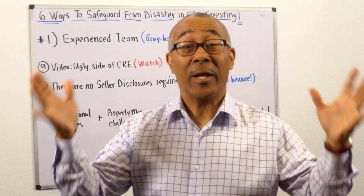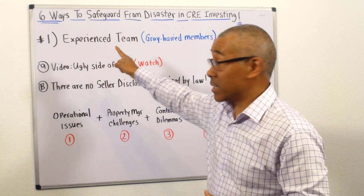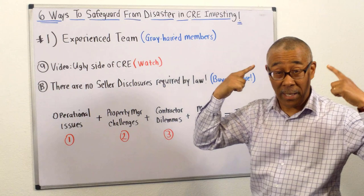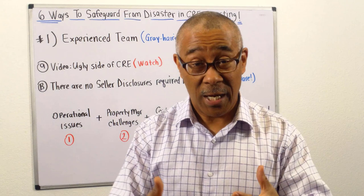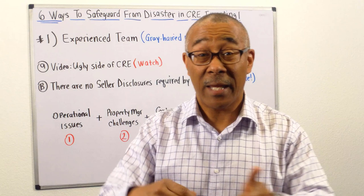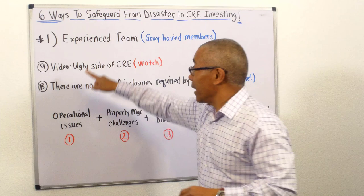Number one: the first way to safeguard from disaster in commercial real estate investing is to have an experienced team — what I call gray-haired members. This market has been on a rise for about 10 years. So if you're working exclusively with someone who's been in the business for 10 years and they know nothing about market volatility — they only know the up — you have to question what's going to happen when something hits the fan. Having an experienced team can really help you mitigate disasters.